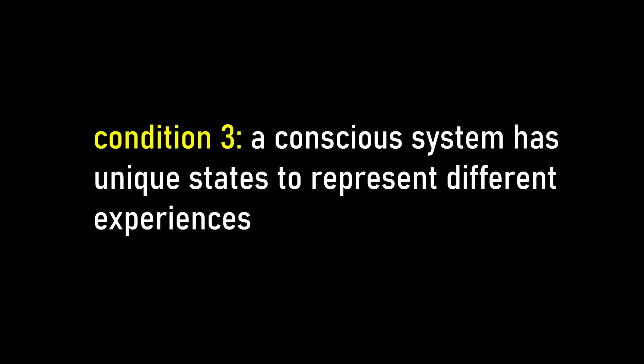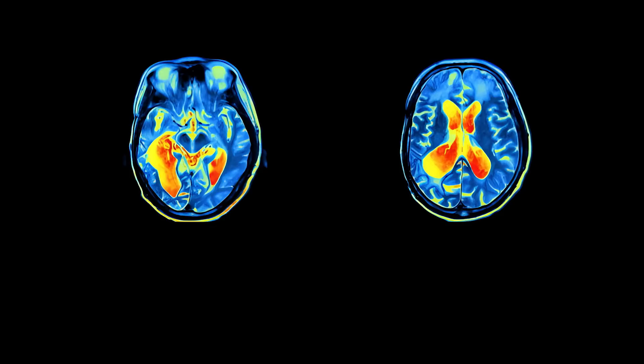Condition number three, a conscious system has unique states to represent different experiences. For example, the brain has different states to distinguish between watching a movie and reading a book.